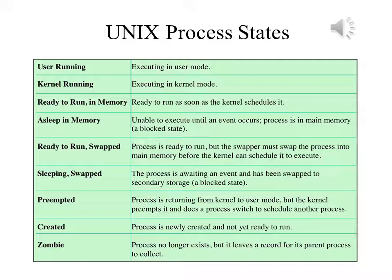Ready to run, swapped: ready to run, but the swapper must swap the process into main memory before it can be scheduled. Sleeping, swapped: awaiting an event and therefore blocked, and it has been swapped to secondary storage and would need to be swapped back into main memory to run. Preempted: the process is returning from kernel to user mode, but the kernel preempts it and switches it out to schedule another process. Created: newly created but not yet ready to run. Zombie: no longer exists, but still has a record for its parent process to collect.